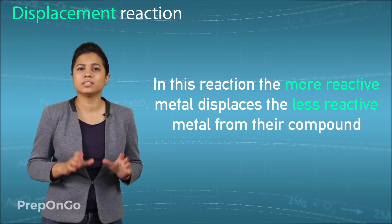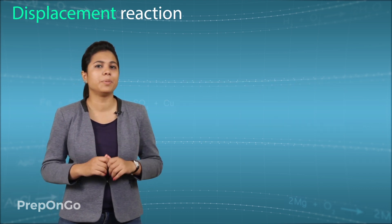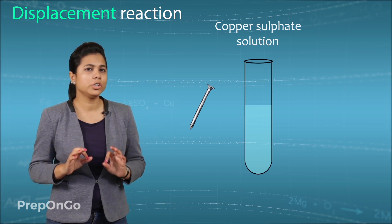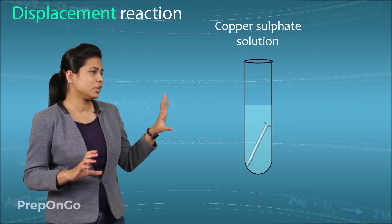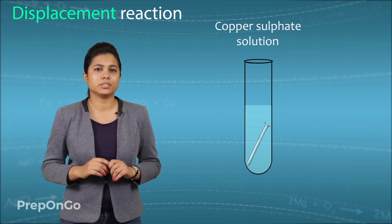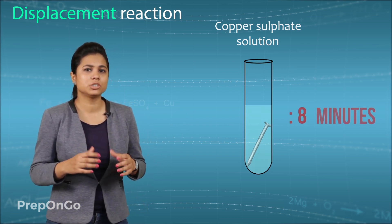So let's understand this displacement reaction by a simple activity. Now I have an iron nail here and I'm going to put this iron nail in the copper sulphate solution. We will keep it for 20 minutes. Let's fast forward this 20 minutes.